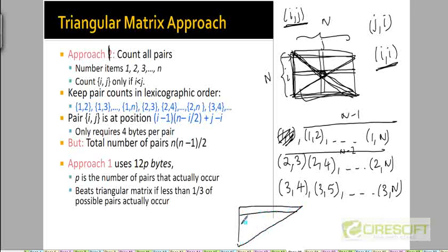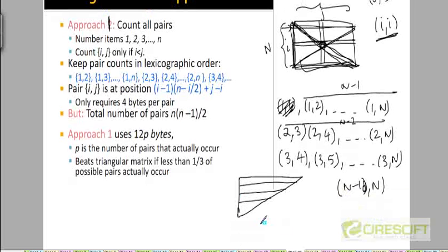First row has n-1 counts. The second row has n-2. The third row has n-3 and so on until the last row, the very last row is going to have a single count, n-1,n. This is the n-1th row and it's just going to have a single entry.